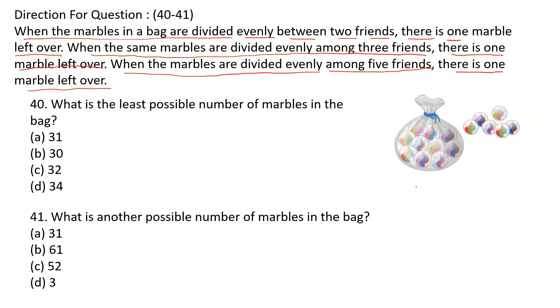That means you have to find a number of marbles. When divisible by two, one is a remainder. When divisible by three, still you are getting one remainder. And when divisible by five, still you are getting one remainder. So what is that number?